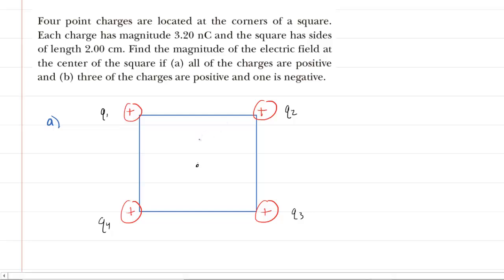Now, in part A of the question, we have four positive charges that are arranged at the corners of a square, and we have to figure out the magnitude of the electric field at that location, at the center of the square. We have marked the charges Q1, Q2, Q3, and Q4, and the first thing we want to do is draw in the four electric fields that are produced by each of the four charges.